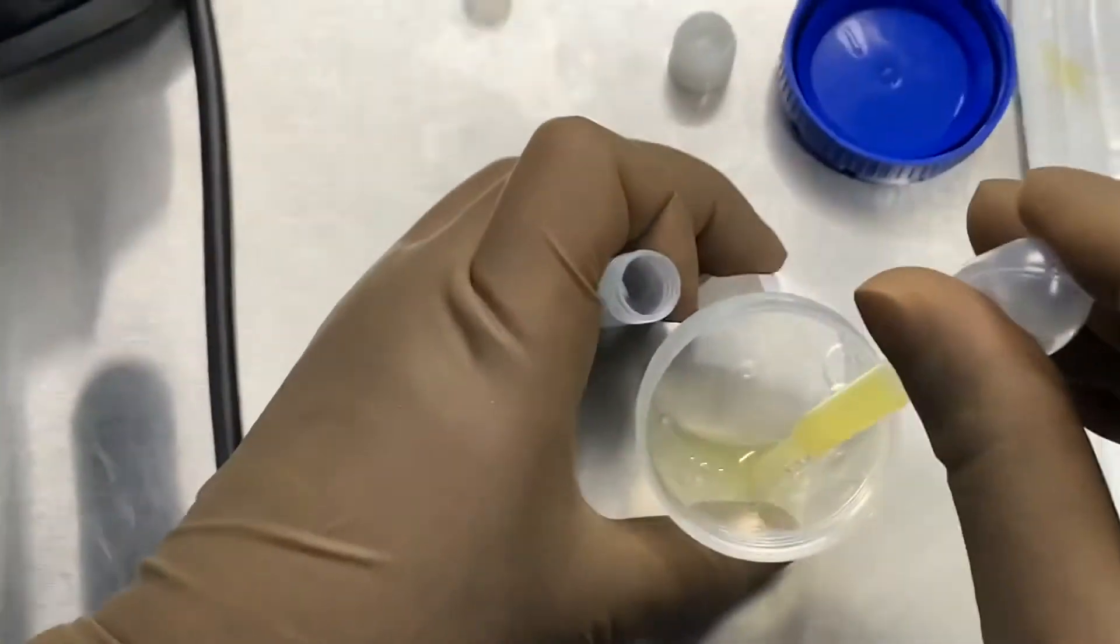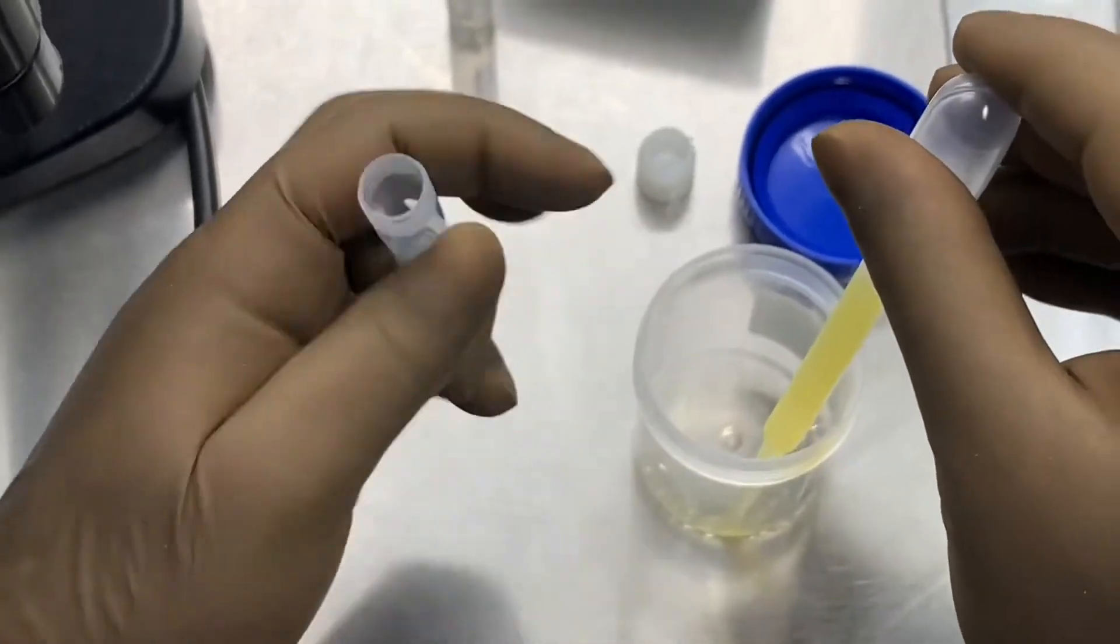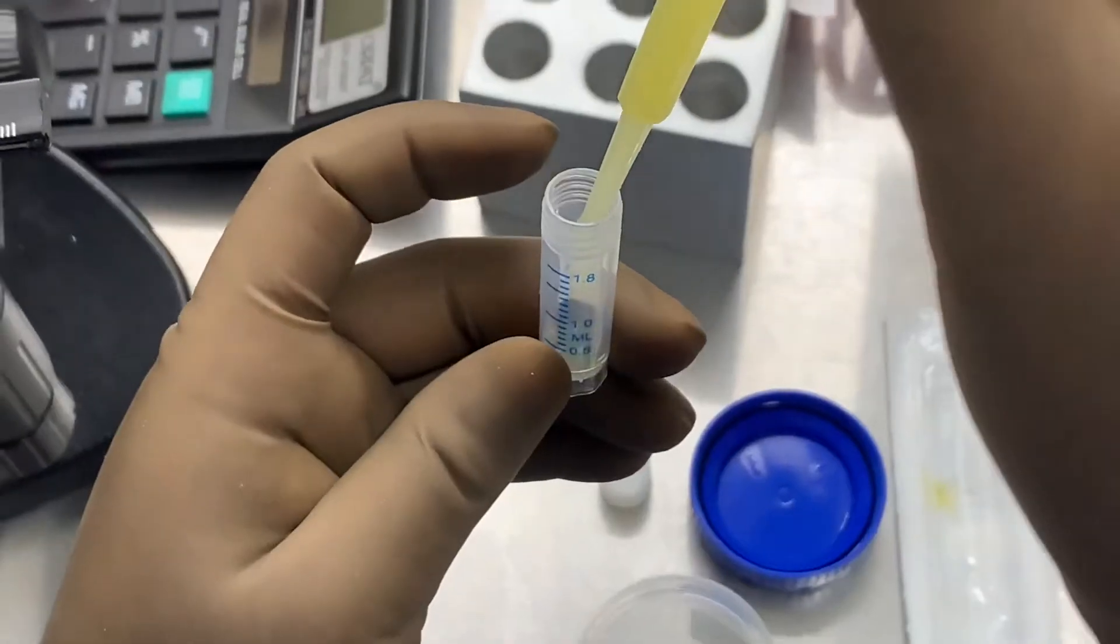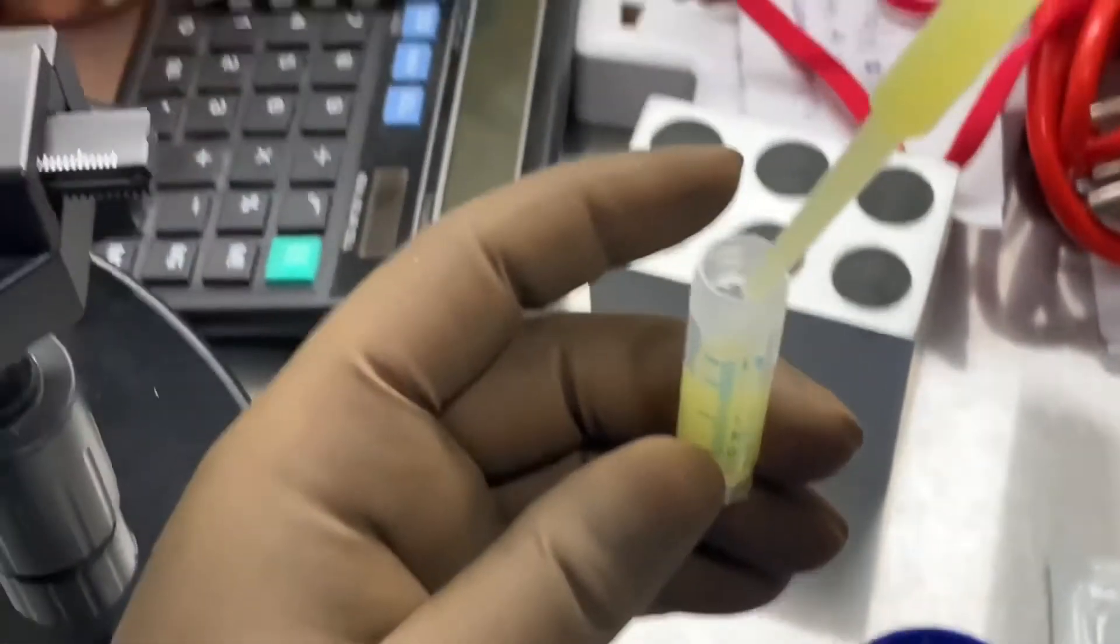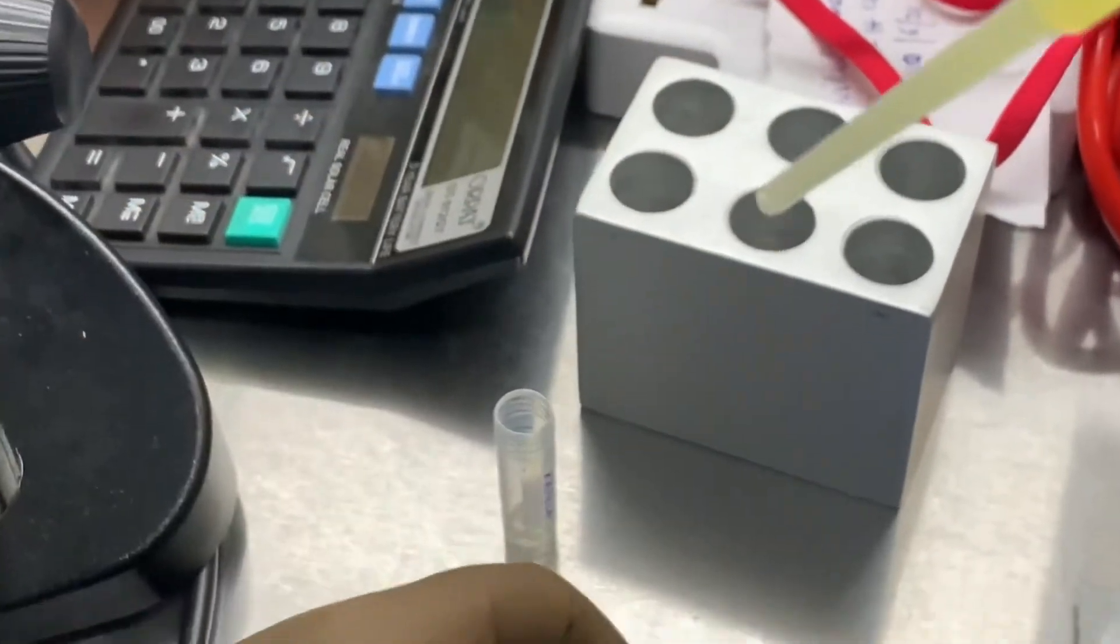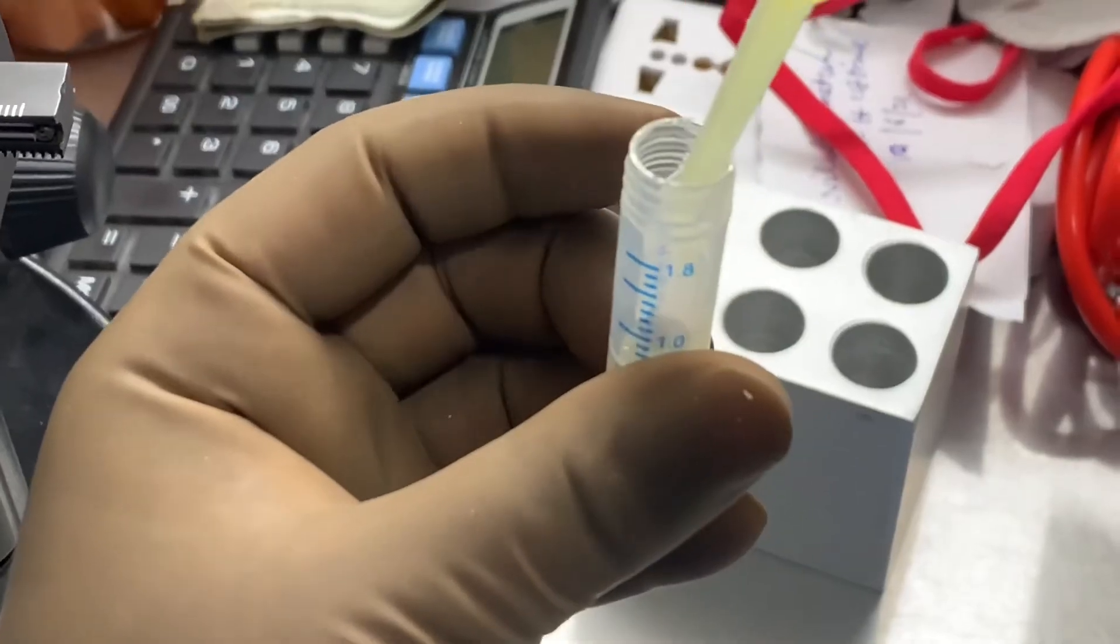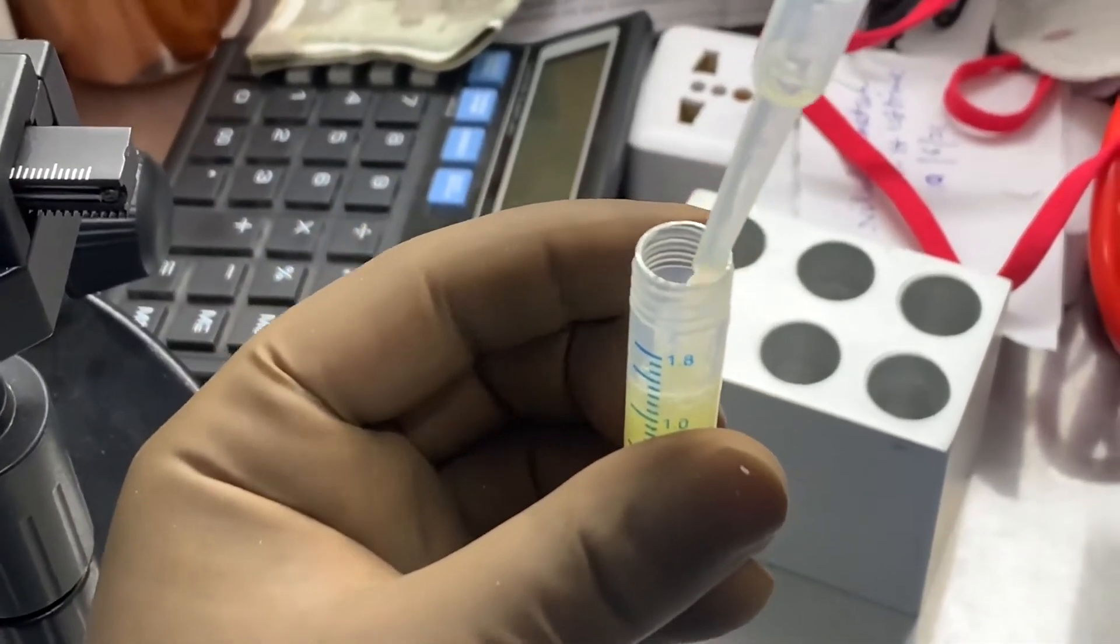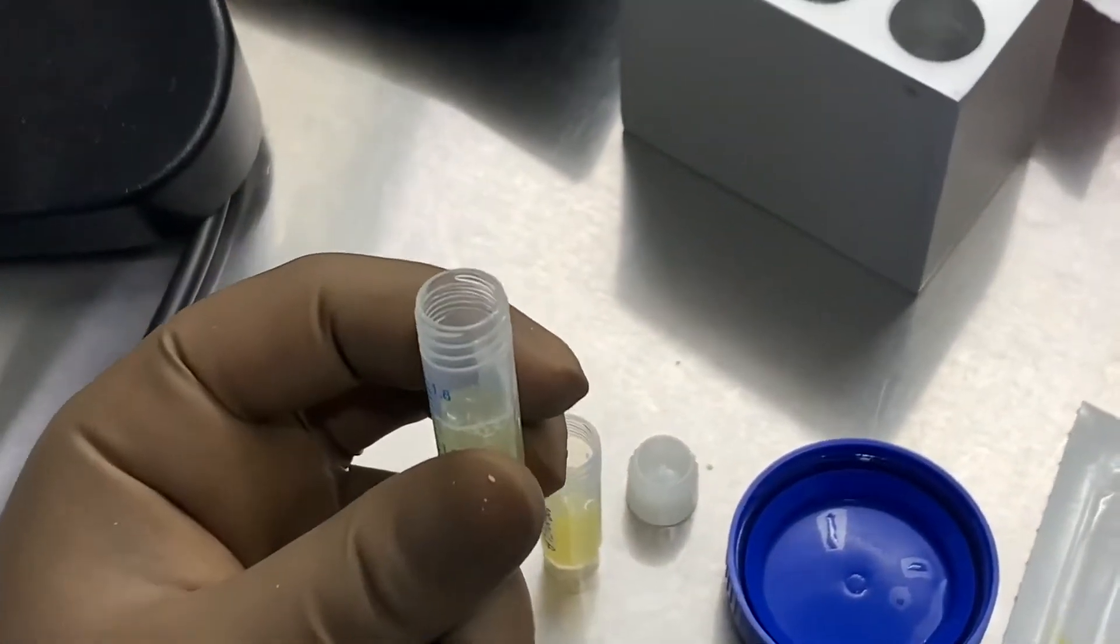Then the semen is properly mixed with cryoprotectant and needs to be kept inside the cryovials. This is the cryovial of 1.5 ml volume. This mark is properly seen over here. We should not keep more than that mark so that the semen once it will be cryofrozen, the volume will be increasing and it will break the seal of the cryovial.